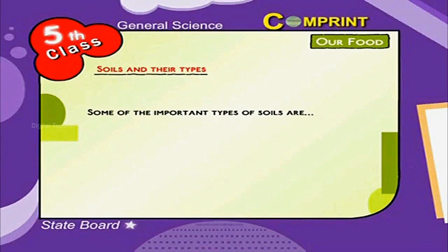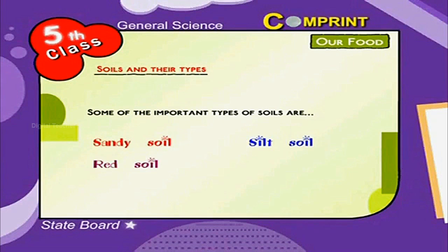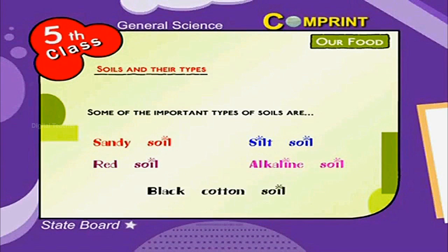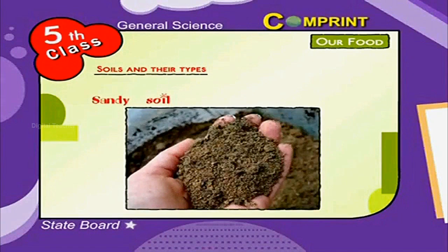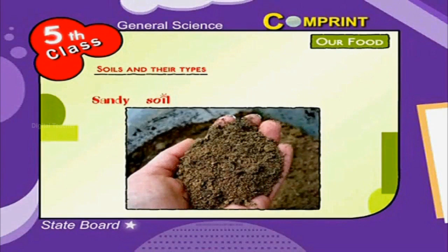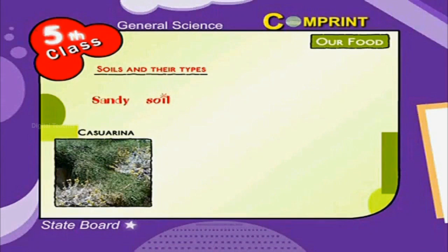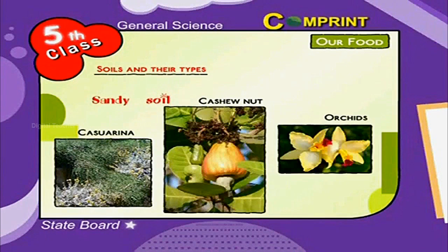Some of the important types of soils are Sandy Soil, Silt Soil, Red Soil, Alkaline Soil, and Black Cotton Soil. Sandy Soil is loose, dry and made up of sand particles. It is abundant in the coastal regions and is suitable for growing casuarina and cashew nut orchards.